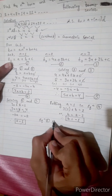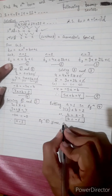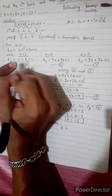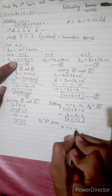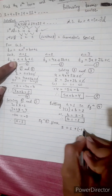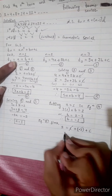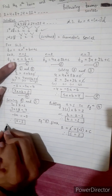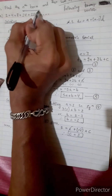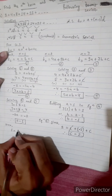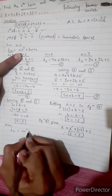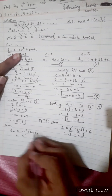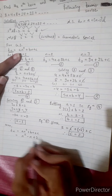Considering Equation 1: t1 = 2 equals a plus b plus c. Substituting a equals 1 and b equals minus 1: 2 equals 1 minus 1 plus c, therefore c equals 2. So the nth term is tn equals n squared minus n plus 2.